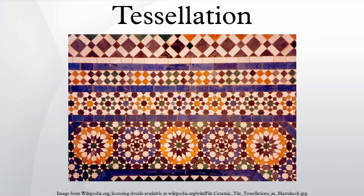Tessellation or tiling in two dimensions is the branch of mathematics that studies how shapes, known as tiles, can be arranged to fill a plane without any gaps, according to a given set of rules. These rules can be varied. A common one is that all corners should meet and that no corner of one tile can lie along the edge of another.